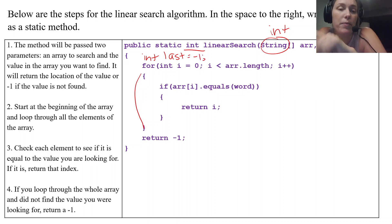I'm going to set it equal to negative 1 right away, so that I'm going to return last. So if I go through this whole for loop again and I don't find what I'm looking for, last is still negative 1. So I'm going to return last.